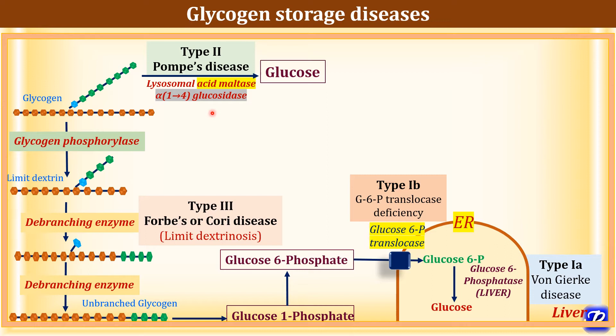Type 3 glycogen storage disease is called Forbes disease or Cori's disease, also called limit dextrinosis. It is due to defect in debranching enzyme. This defect leads to accumulation of abnormal glycogen in liver, heart, and muscle. It is also autosomal recessive; the patient presents with moderate hypoglycemia, acidosis, progressive myopathy, and hepatomegaly. Type 4 glycogen storage disease is associated with glycogenesis and is due to defect in branching enzyme, with accumulation of abnormal structure of glycogen affecting liver, heart, and muscle.